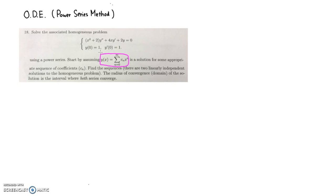Since we need to plug those into the ODE, we have to find the first derivative and the second derivative. The first derivative — you just take the derivative of each term. We get y prime equal to the summation. Since n equals 0 gives 0 anyway, I'm going to start from n equals 1 to infinity. cn is just a constant, and the derivative of x to the n is n times x to the n minus 1.